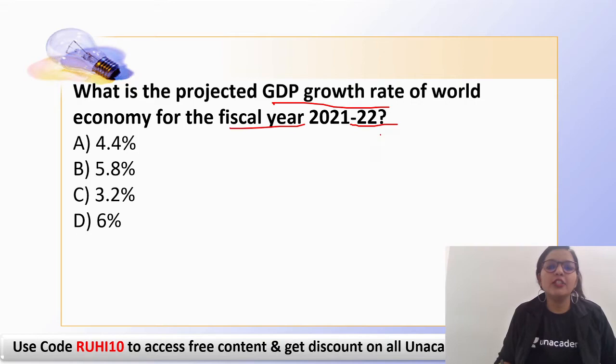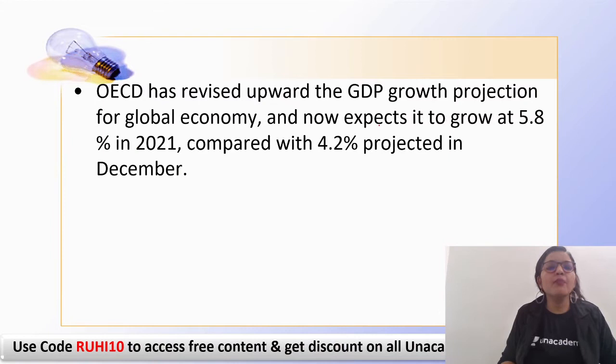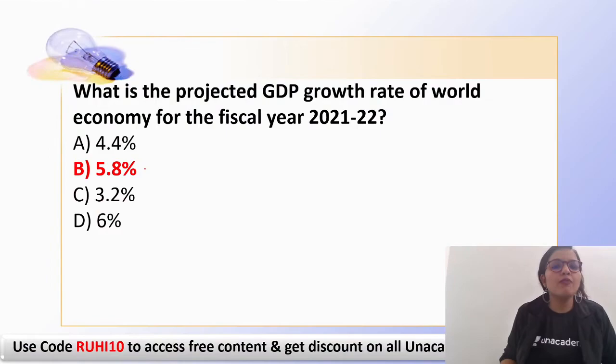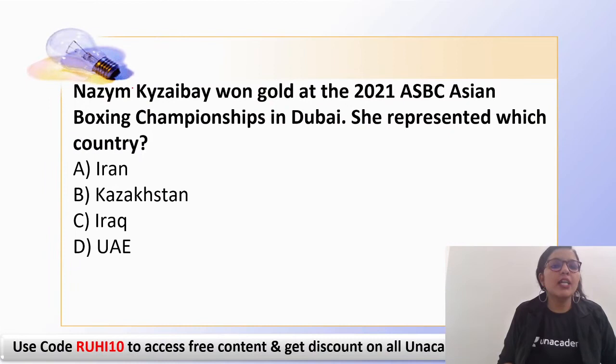The next question: what is the projected GDP growth rate of the world economy for fiscal year 2021–22? The correct answer is 5.8%. As projected by OECD, the world economy is expected to grow at 5.8% in 2021, compared to the 4.2% projected in December of last year. Remember: the GDP forecast for fiscal 2021–22 is 5.8%.